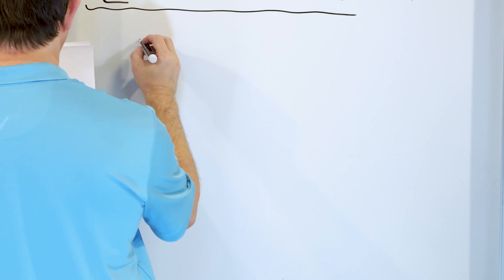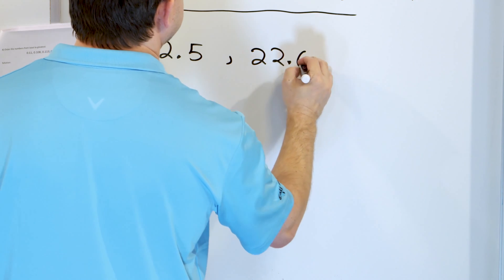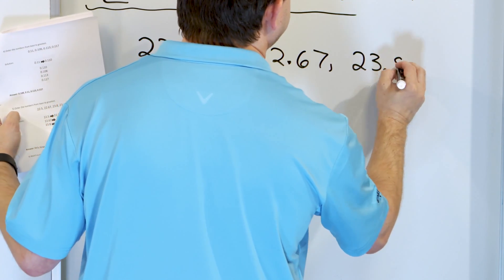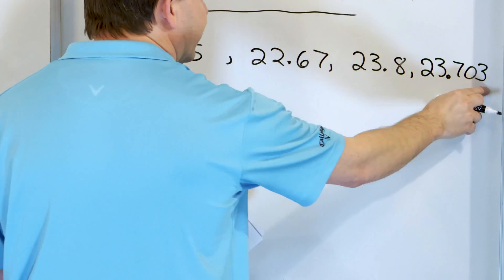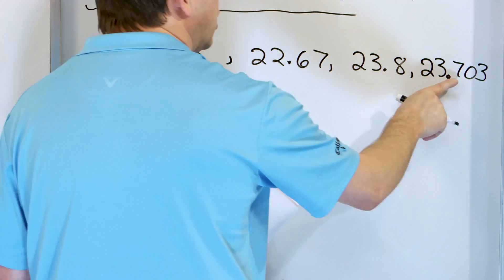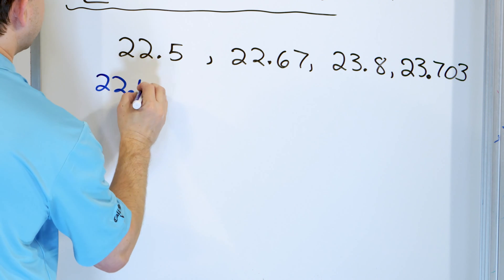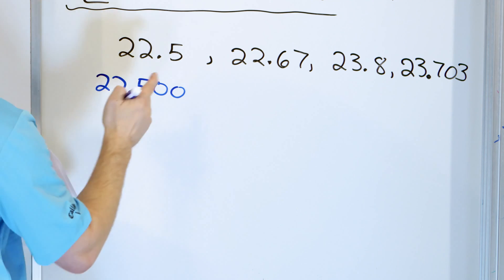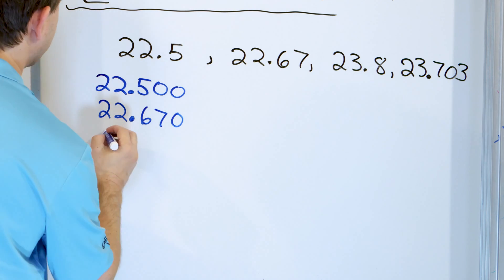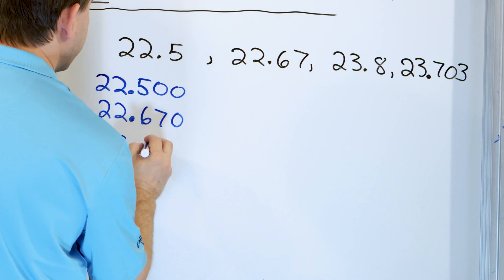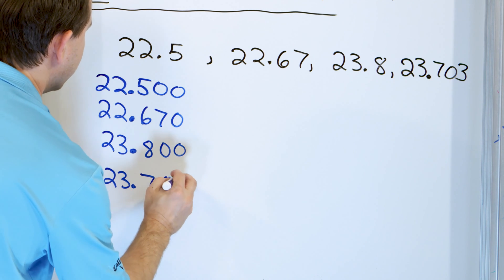Let's take a look at the following: 22.5, 22.67, 23.8, and 23.703. We have three digits in 23.703, two in 22.67, and one each in 22.5 and 23.8. The largest number of digits is three, so we stack them up and make them all have three digits: 22.500, 22.670, 23.800, and 23.703.